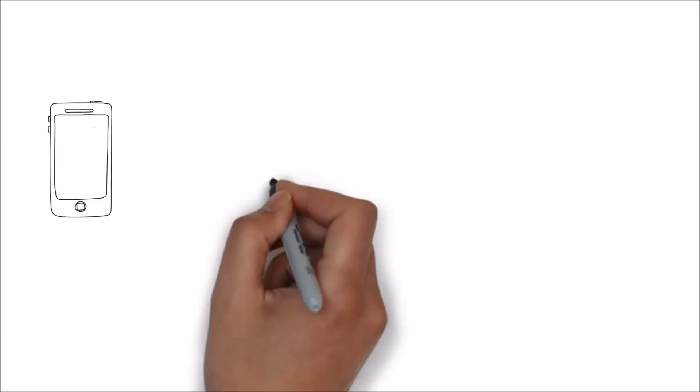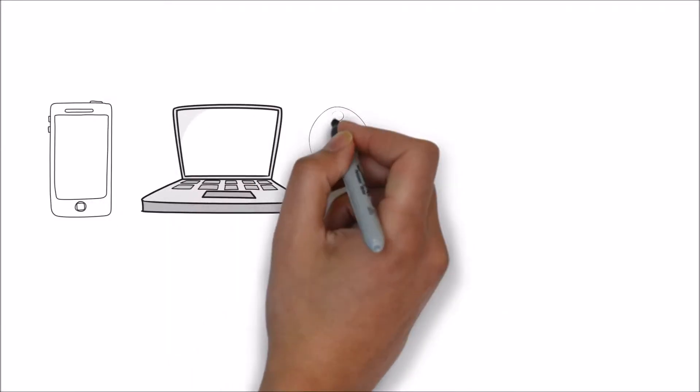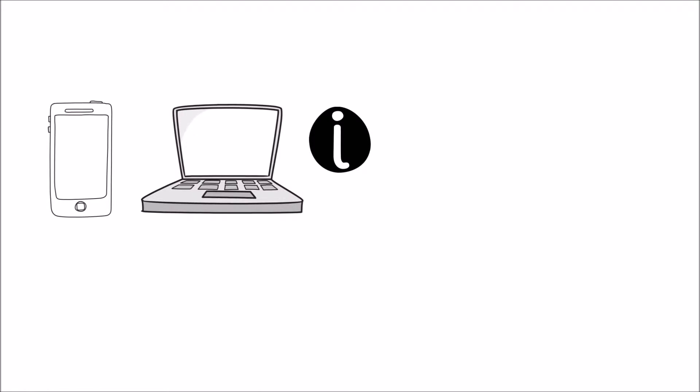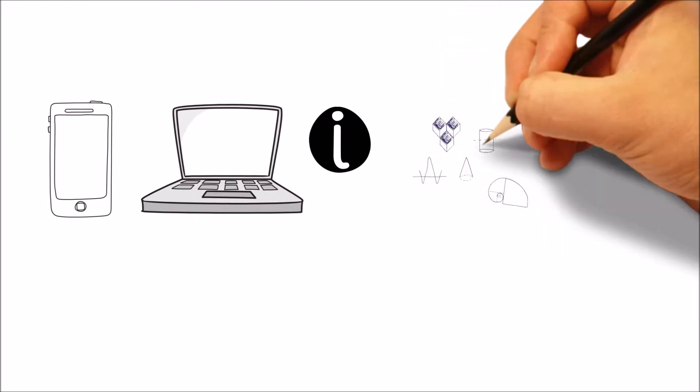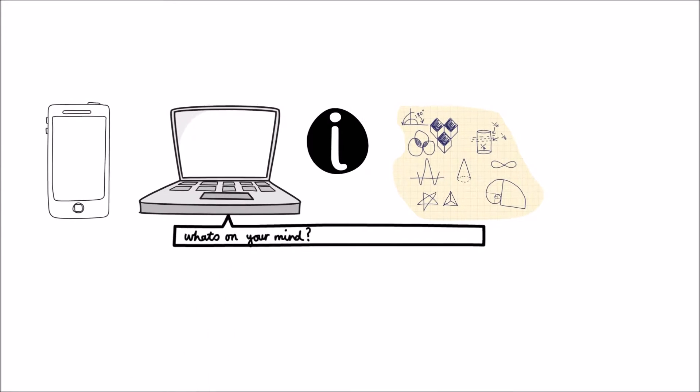We use the internet all the time on our phone, tablet, or computer. It provides us information about every subject in the world, helps us solve problems, and lets us communicate with our friends at any given moment. But how does the internet actually work?